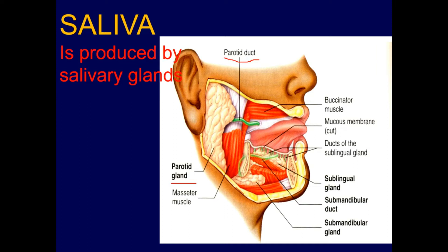The sublingual gland is an elongated gland and is the smallest of the three main salivary glands. It lies just below the mucosa on the floor of the mouth. It has both serous and mucus types of cells, but the mucus-secreting cells are dominating. It has multiple ducts — about 8 to 20 — through which it drains its secretion.